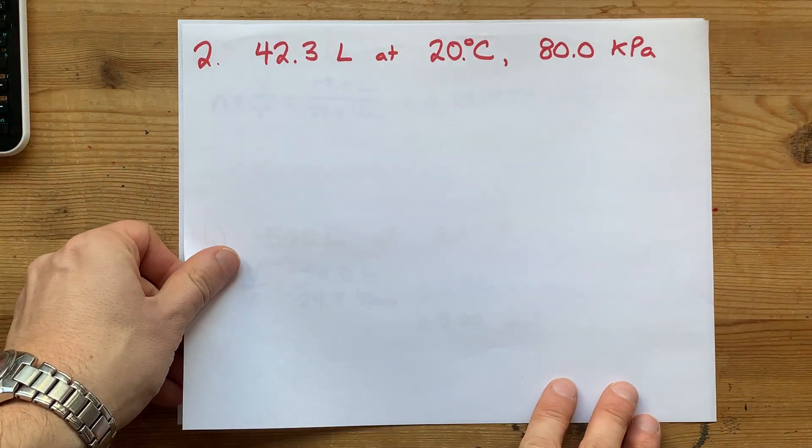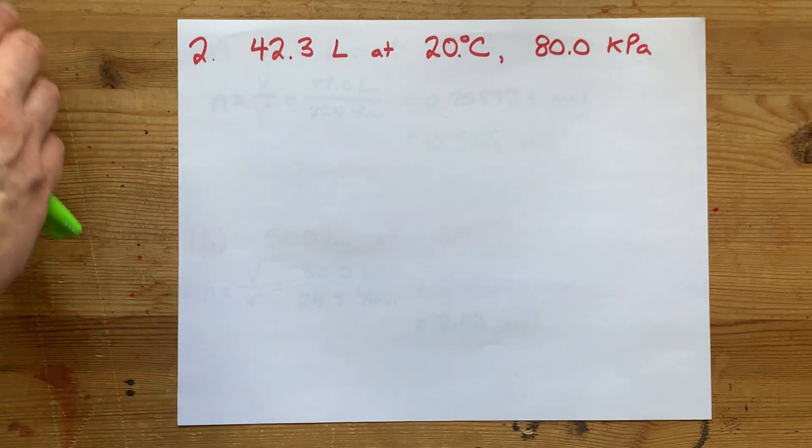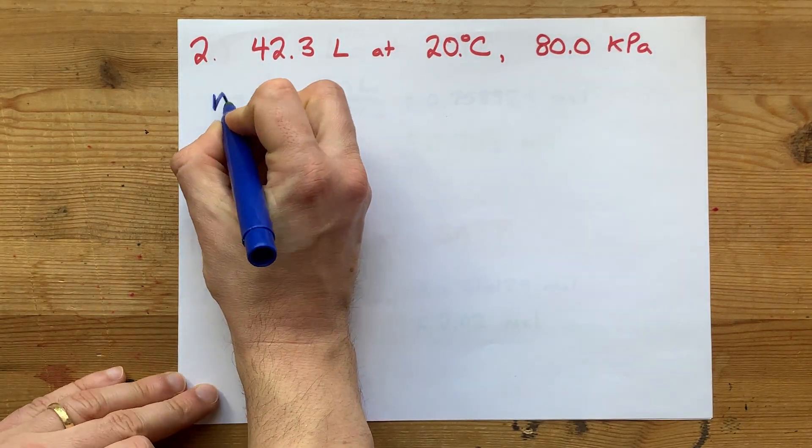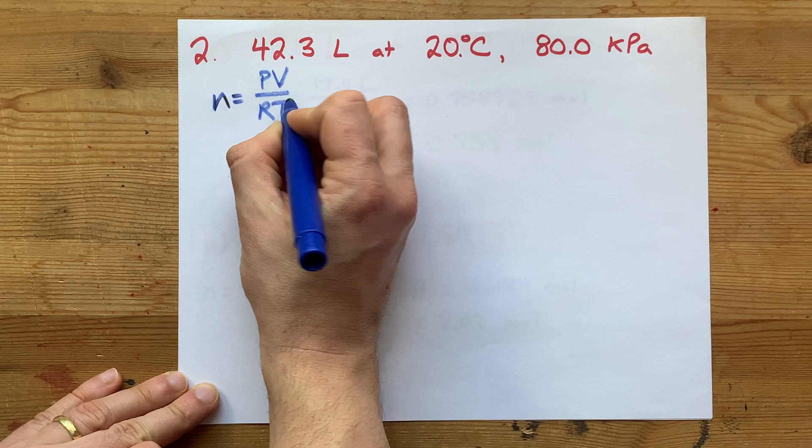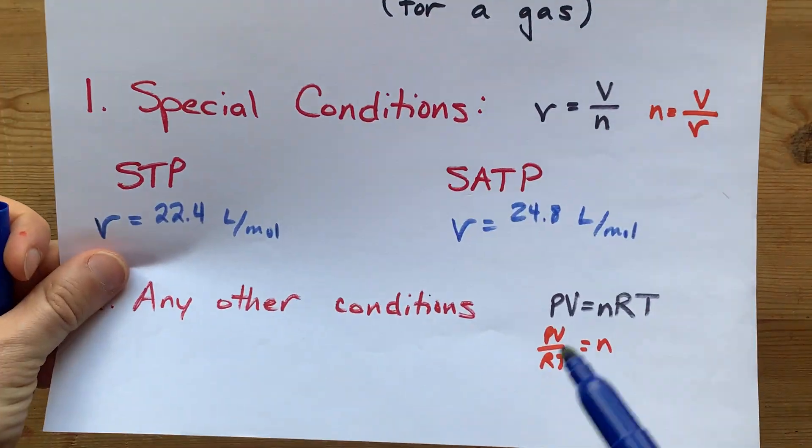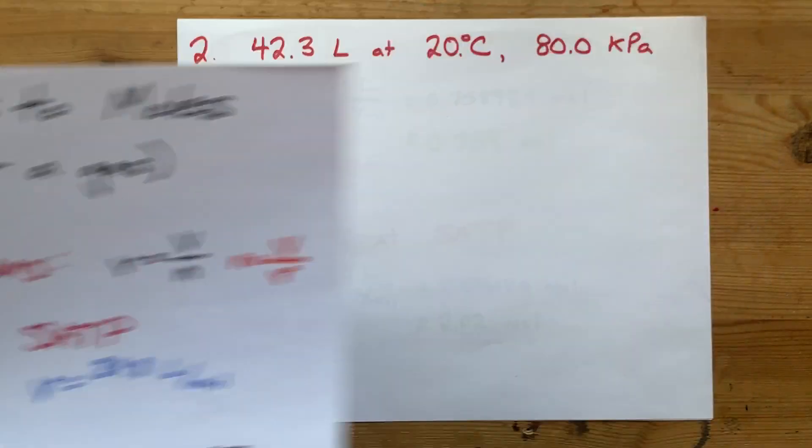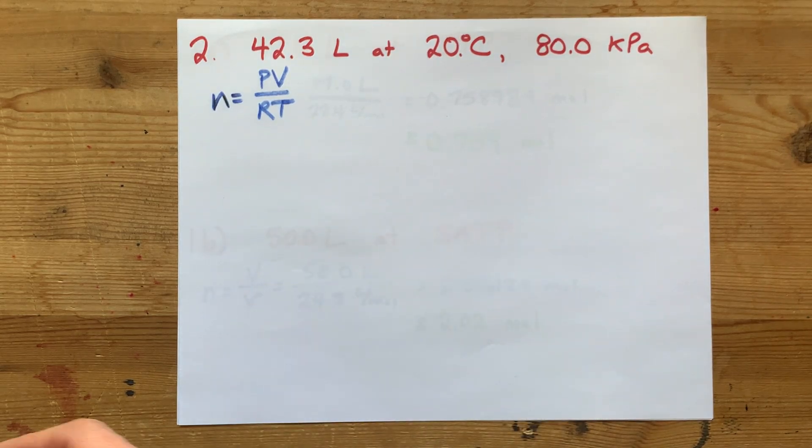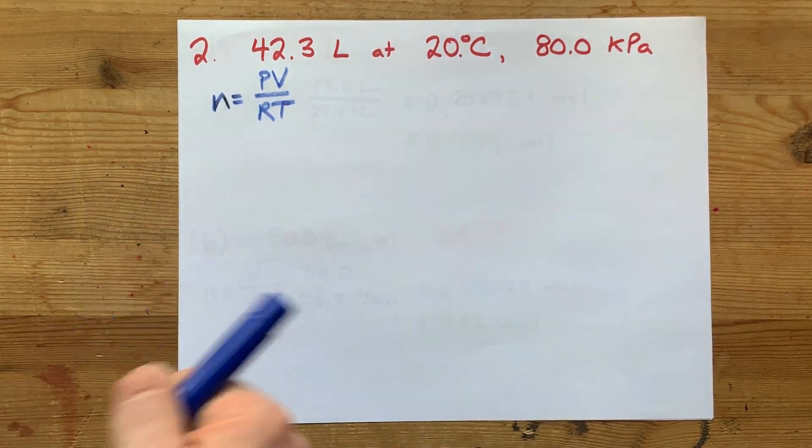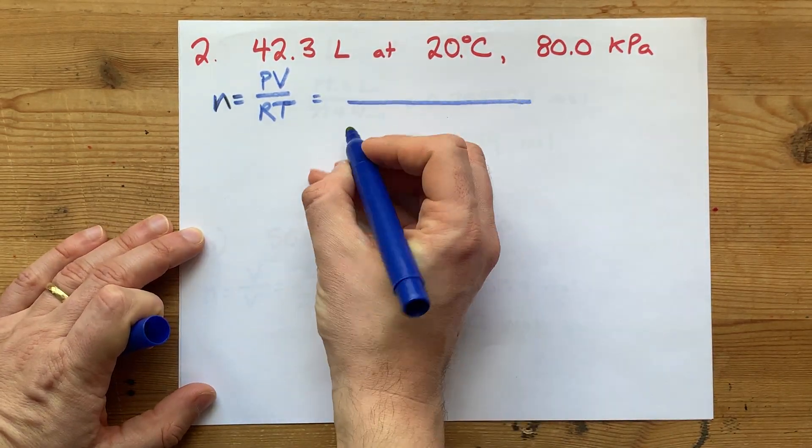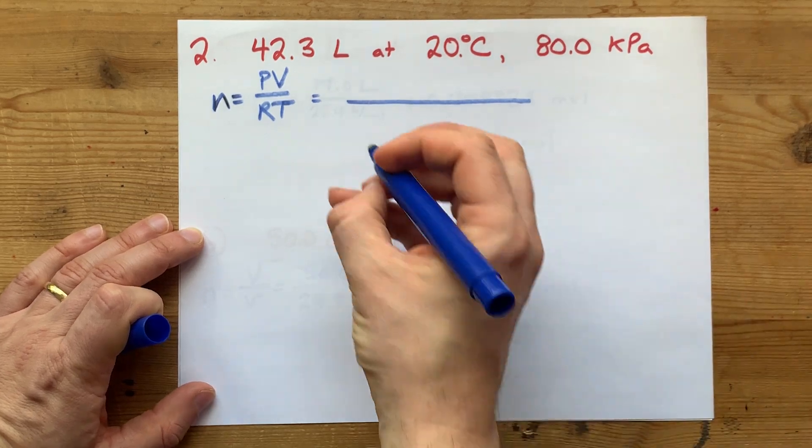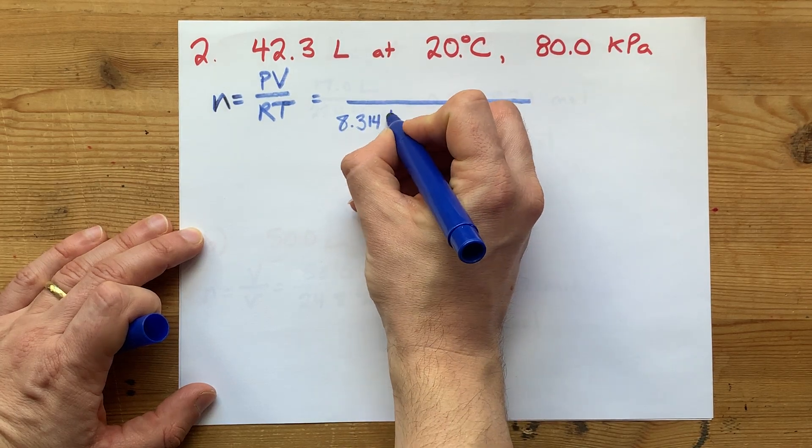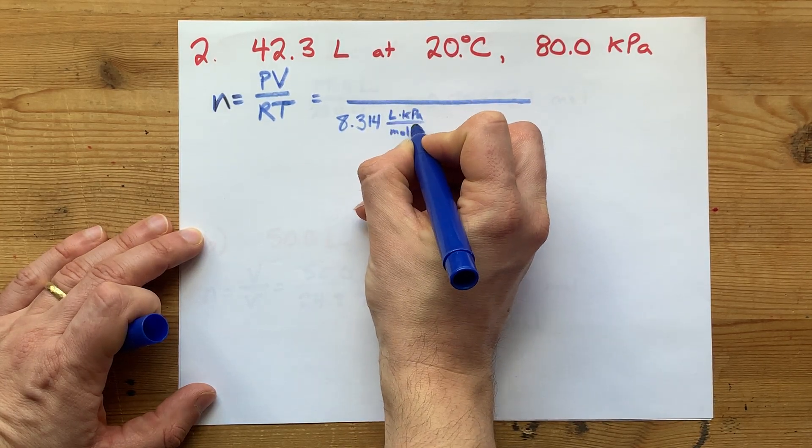What if you were given other conditions? Then you'll use the ideal gas law. PV = nRT means that n = PV/RT. That's just algebra, dividing RT from both sides. The constant R has a certain unit your teacher probably uses. Most teachers use 8.314, with units of liters kilopascals per mole kelvin.